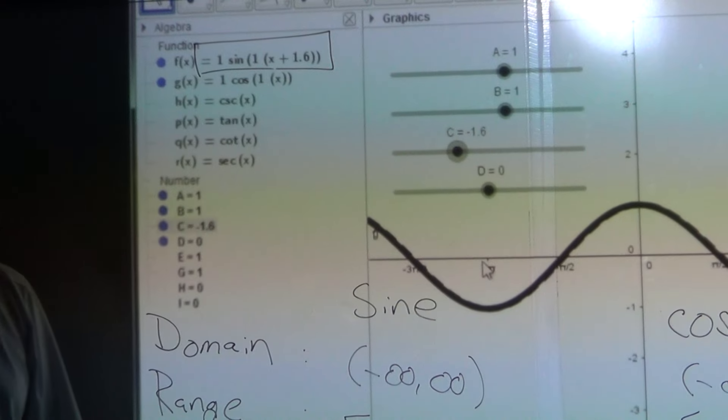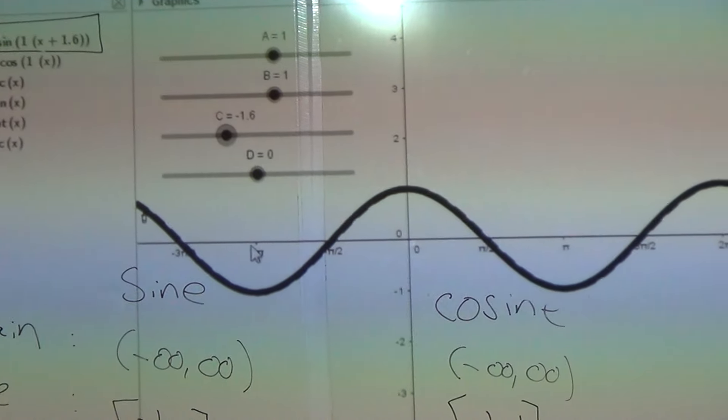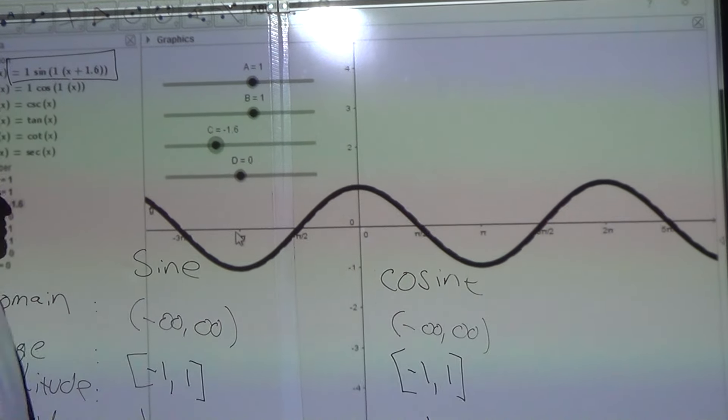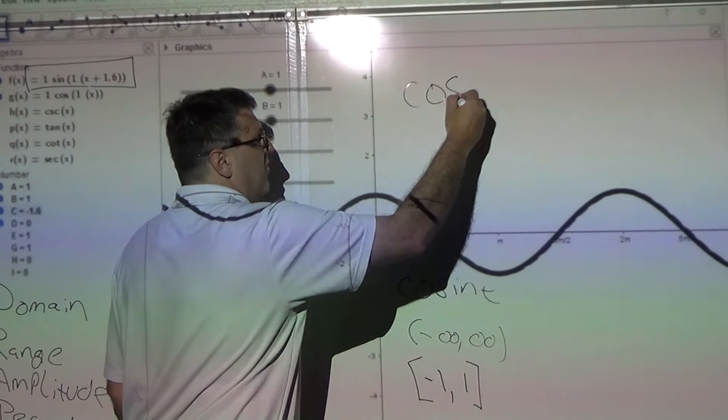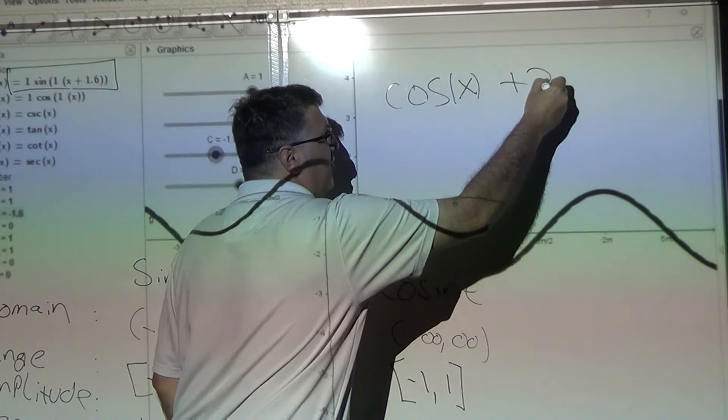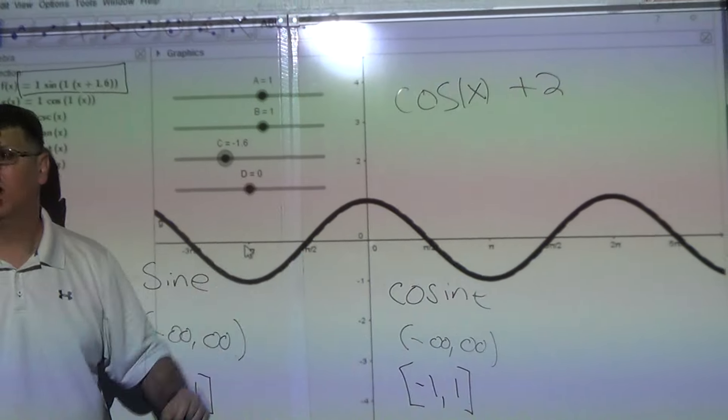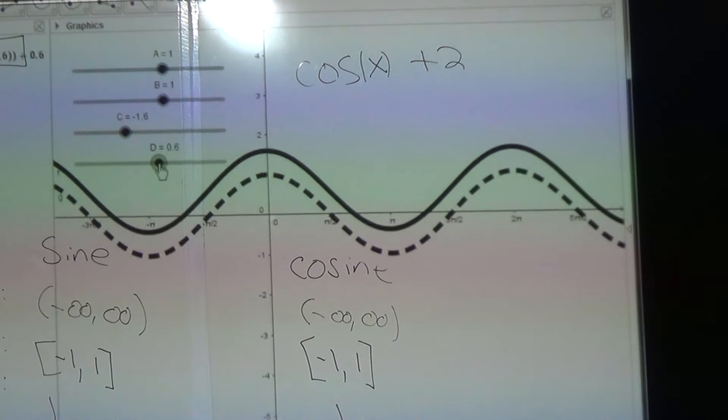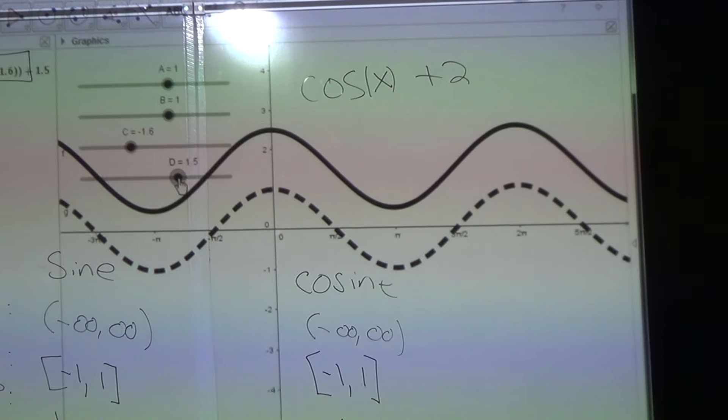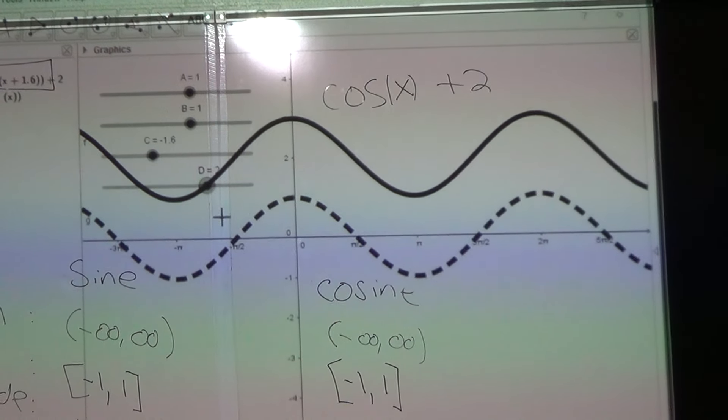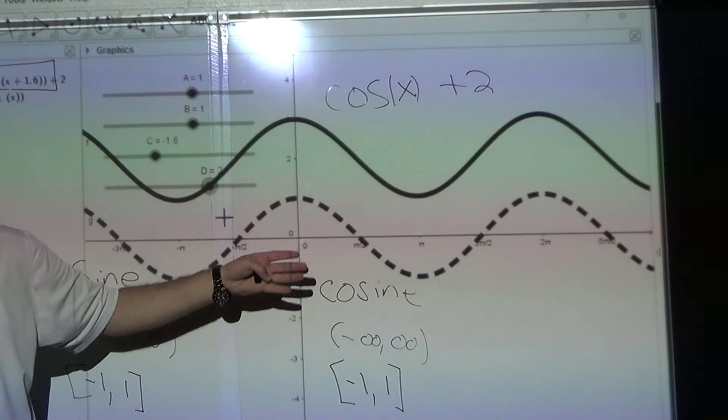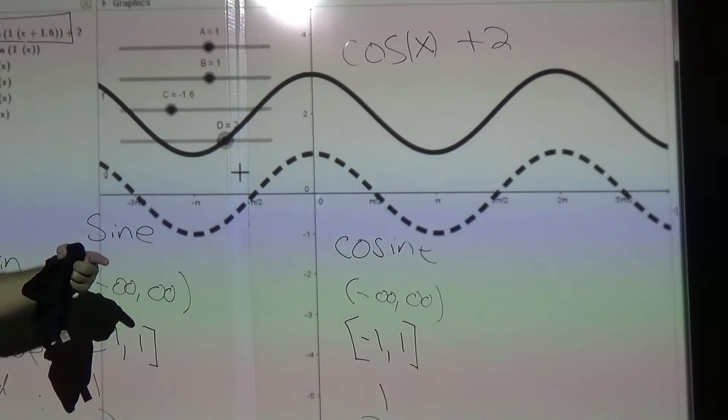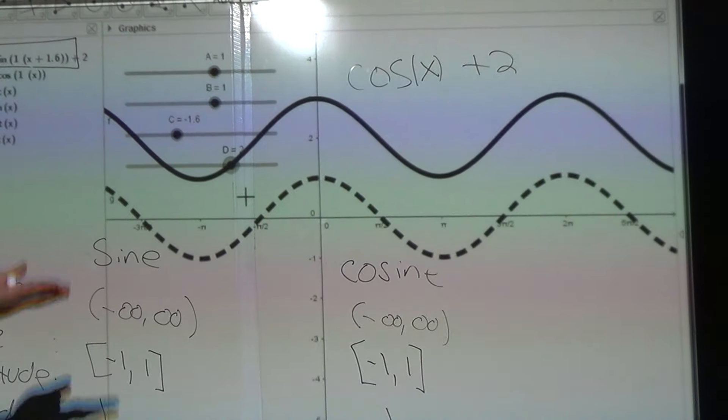Now, we're going to take this and do a translation. We're going to move it up. On your springboard, it has you do cosine of x plus 2. That means the graph is going to move straight up 2. So go ahead and move d to positive 2. If you notice when this was moving, nothing else changed besides its vertical location. It didn't shrink. It didn't stretch. It really didn't do anything. All it did was move straight up.